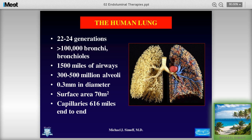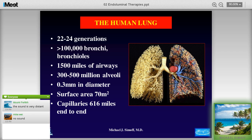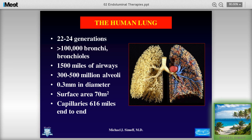The first thing I like to begin these talks with is the world that we live in. The human lung has 22 to 24 generations of airways — I usually use 24 as a rule of thumb — with greater than 100,000 bronchi. That's about 1,500 miles of airways going down to the respiratory bronchioles and alveolar ducts. Three to five hundred million alveoli with an average diameter of 0.3 millimeters. The surface area of the alveoli laid out is about 70 square meters — the size of a tennis court — and capillaries end to end is 616 miles.